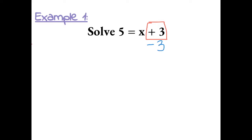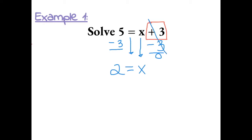Whatever we do to one side of the equal sign, we always have to do to the other side of the equal sign to keep the equation balanced. So if I subtract 3 on the right side, we also have to subtract 3 on the left side. 5 minus 3 gives us 2. Adding 3 and subtracting 3 equals 0 and cancels out, so we're left with 2 equals x, or x equals 2.